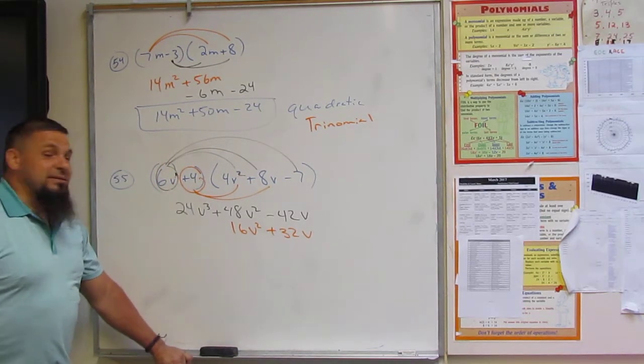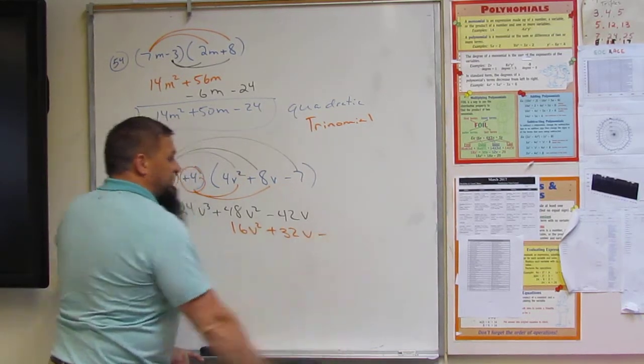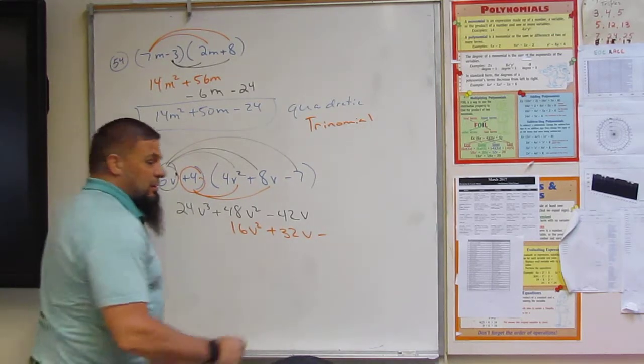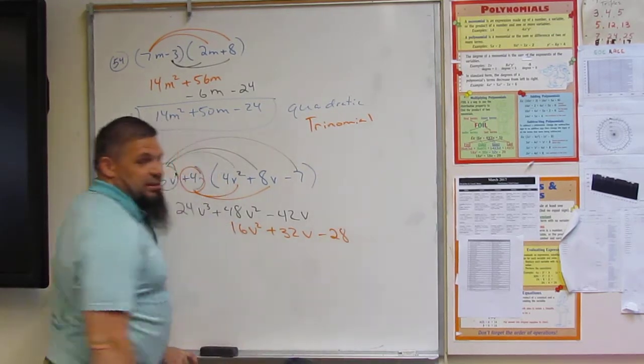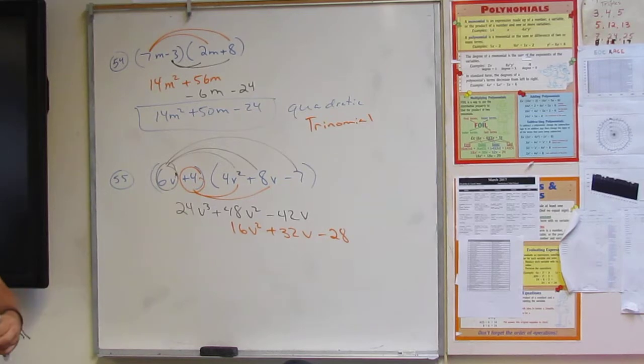All right. Then we've got 4 times 7. Negative 7. So this is going to be a negative. 28. Right? Like you said before. Go for the wrong one.